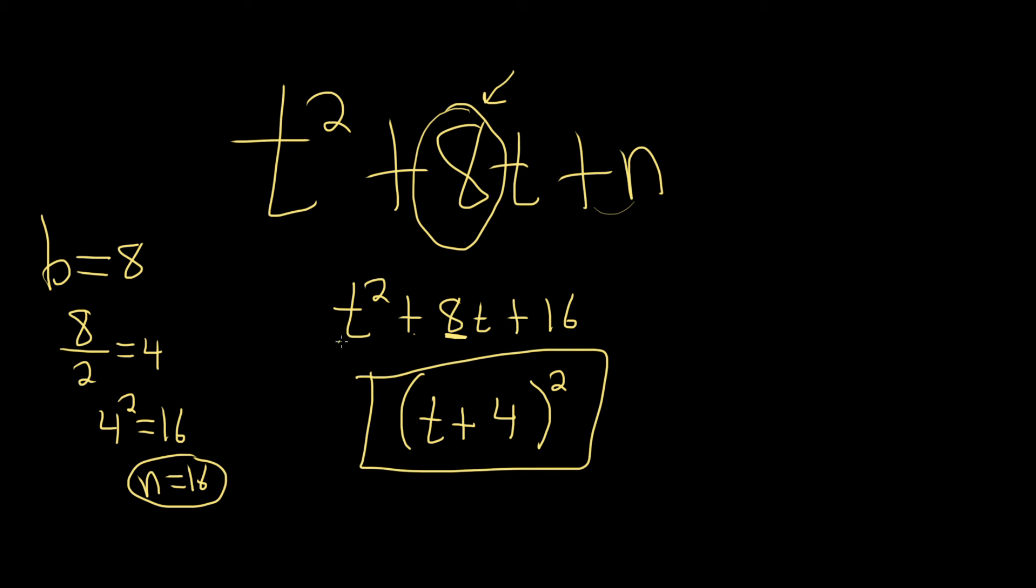So this always magically factors into this. That's the cool part. Once you put the 16 here, you don't actually have to think about factoring. That's the whole point of completing the square, is that if you divide this by 2 and square it, and you put it where the n is, this will always work.